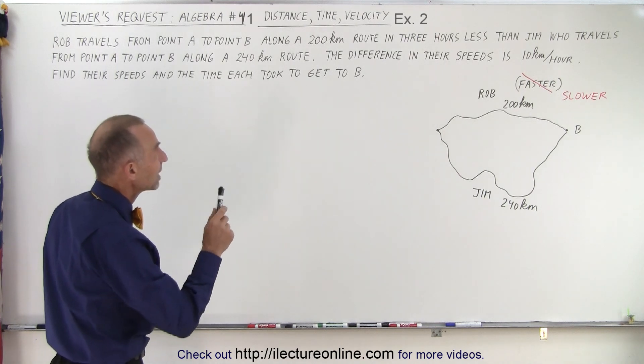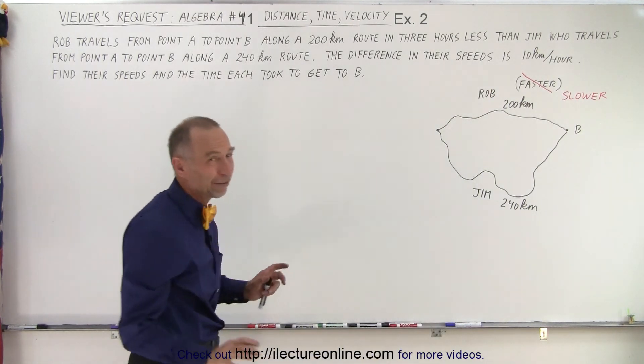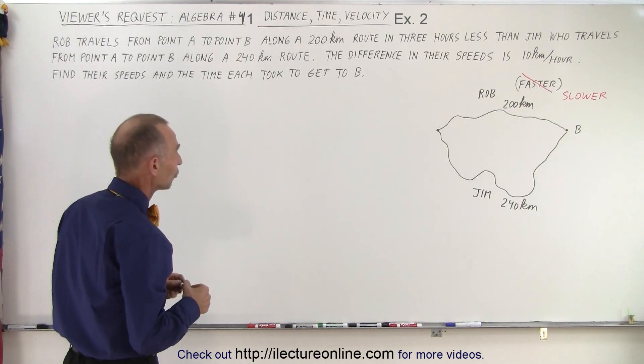The difference in their speeds is 10 kilometers per hour, so they don't tell us who is faster and who is slower. We have to figure that out and find their speeds and the time each took to get to B.